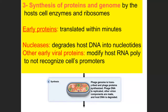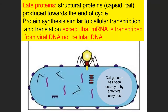Then comes synthesis of proteins and genome — meaning replication, transcription, and translation. The first proteins transcribed and translated within minutes of entry are 'early proteins' that allow the virus to take over the host: for example, nucleases that degrade host DNA into individual nucleotides for the virus to use, and proteins that modify the host RNA polymerase to recognize viral promoters. 'Late proteins' then help assemble new viral particles and eventually release them into the environment.